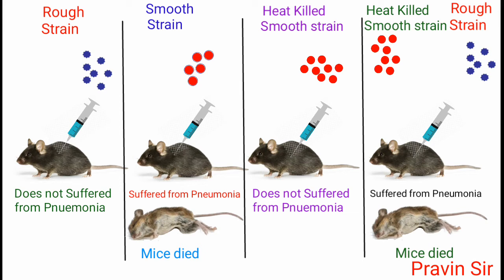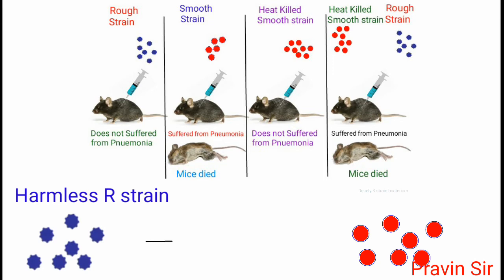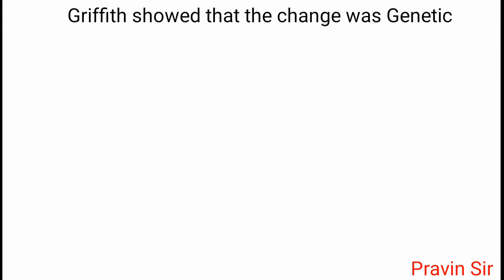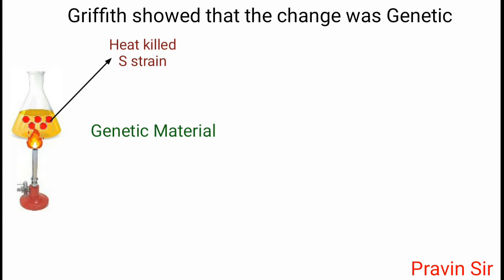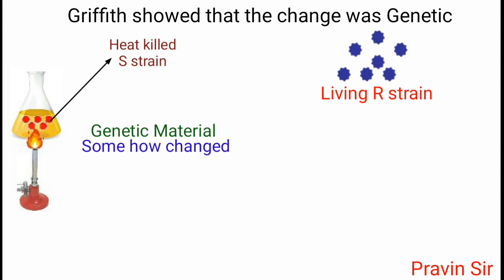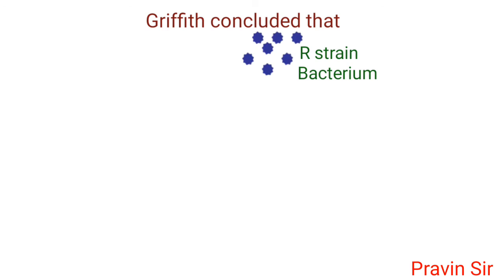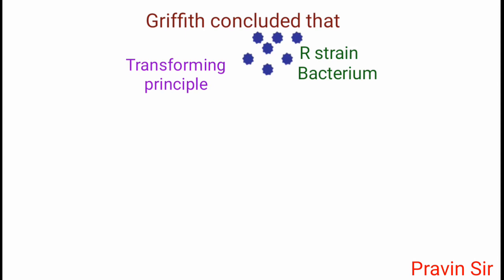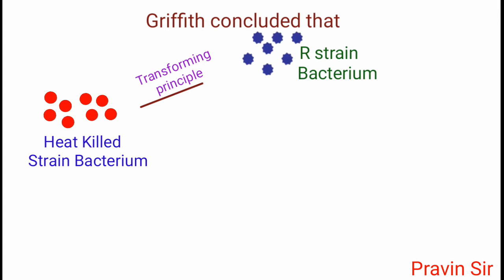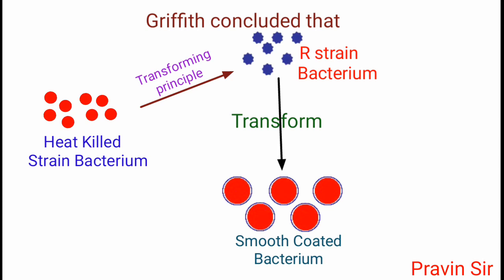From the above four experiments, it was clear that something had transformed the harmless R strain into the deadly S strain bacterium. Griffith showed that the change was genetic. He suggested that genetic material from the heat-killed S strain had somehow changed living R strain bacterium into S strain. Griffith concluded that the R strain must have taken up what he called the transforming principle from the heat-killed S strain, which allowed the R strain to get transformed into smooth-coated, virulent bacterium.